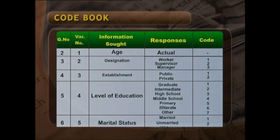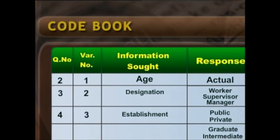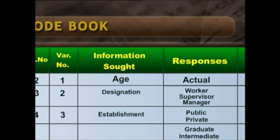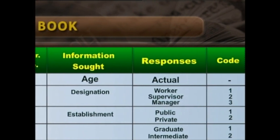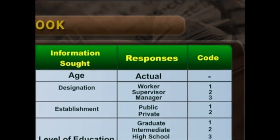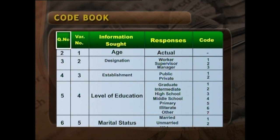In order to demonstrate the point discussed above, a section of a code book is presented here. In a code book, there are five columns. The first column represents question number, the second column gives variable numbers, the third is information short, the fourth is responses, and the fifth column gives the codes. In the first column, we write the question number which is likely to be analyzed. The code book starts with question two — it may be because question number one, such as the name of the respondent or village, contains only identification information and does not need to be analyzed.